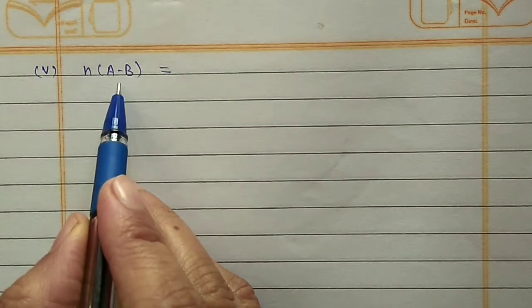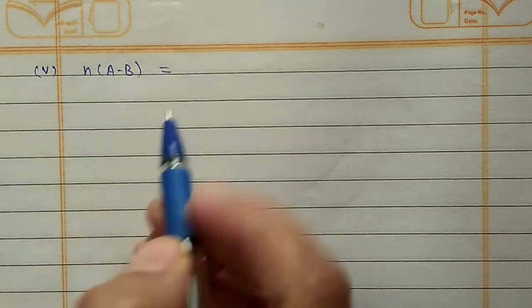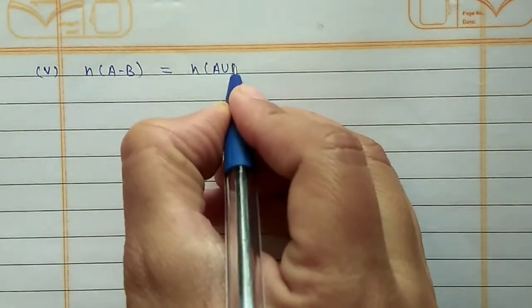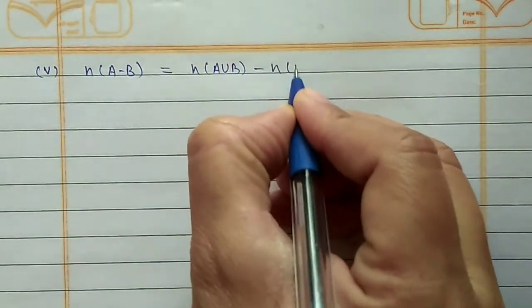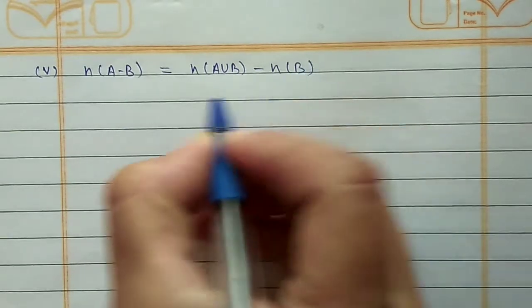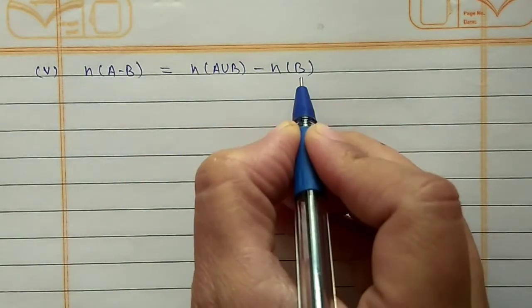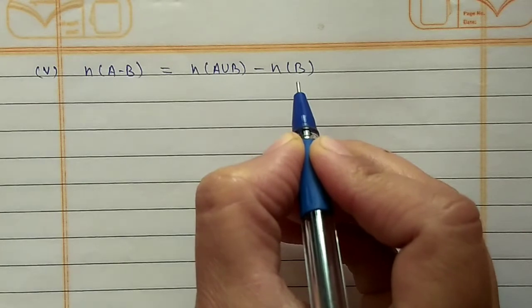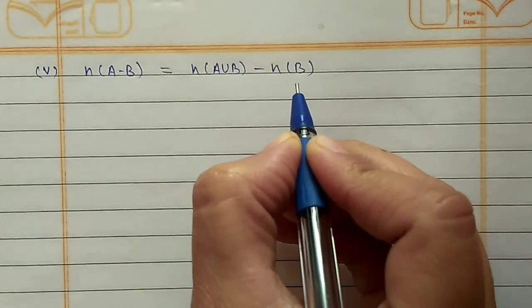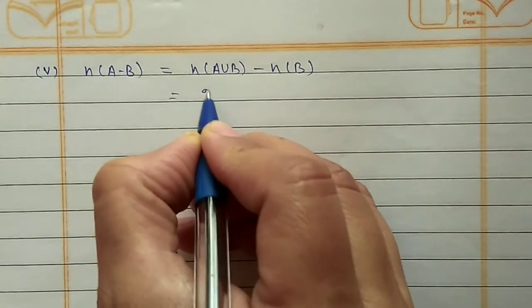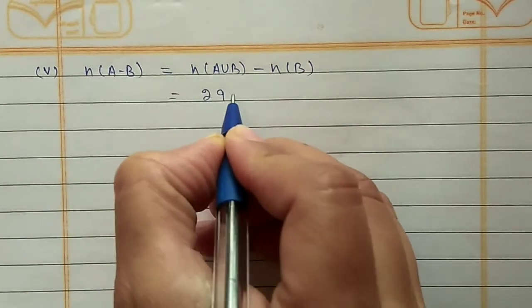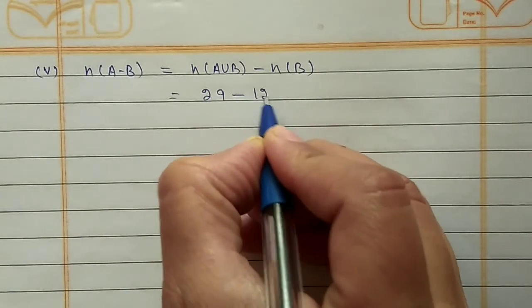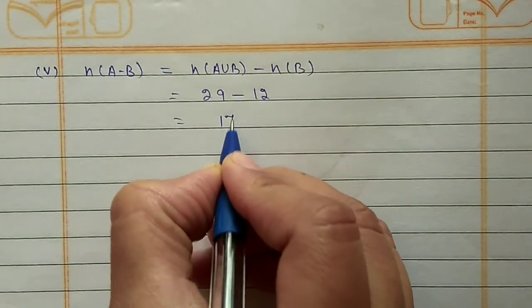For the fifth part, N(A - B): using the second property N(A - B) = N(A∪B) - N(B). N(A∪B) is 29 and N(B) is 12, so 29 - 12 = 17.